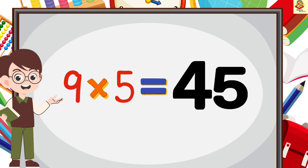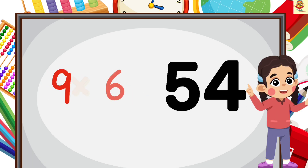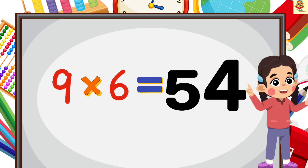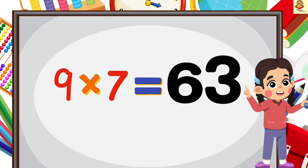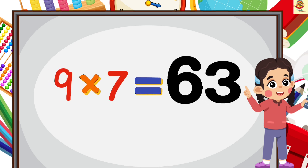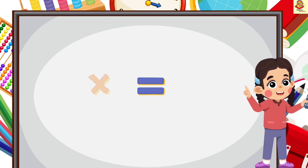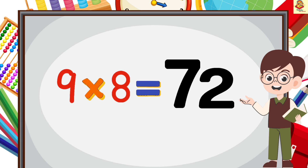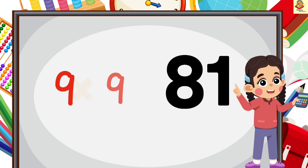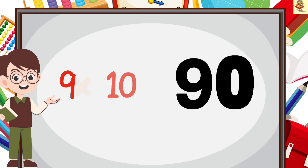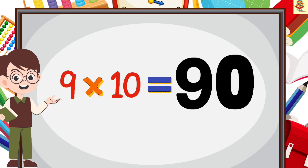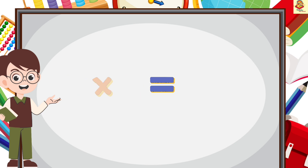9 fives are 45, 9 sixes are 54, 9 sevens are 63, 9 eights are 72, 9 nines are 81, 9 tens are 90.